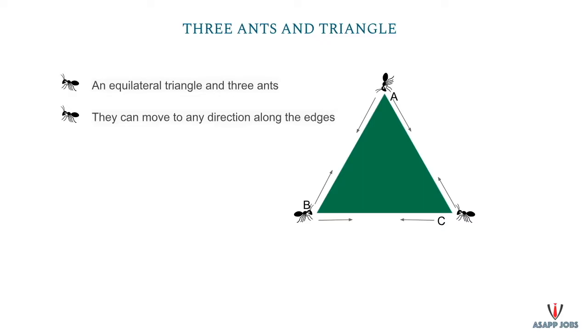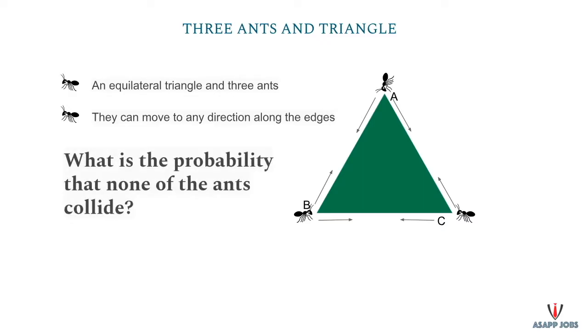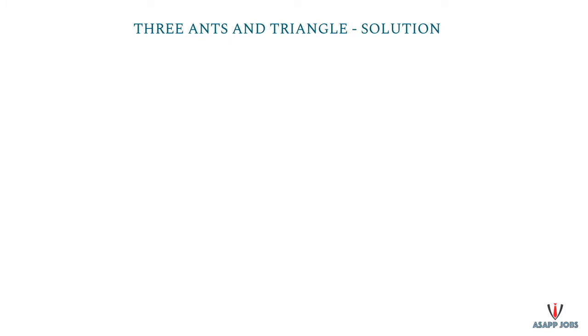We have to find the probability that none of the ants will collide with each other. You can solve this problem logically and you can solve it through probability as well. Take a seat back, try out the solution, and then resume this video. We will solve this logically and technically both ways.